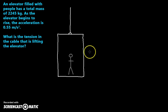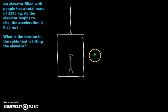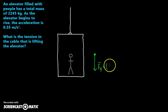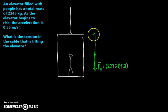An elevator filled with people has a total mass of 2245 kilograms, and the elevator begins to rise. The acceleration is 0.55 meters per second squared. What is the tension? First, I always like to draw a picture and then a free body diagram. I just care about the elevator itself. The elevator is being pulled up, so I have gravity — equal to 2245 times 9.8 meters per second squared — and the only other force is the rope, which must be bigger than gravity. That's the tension.